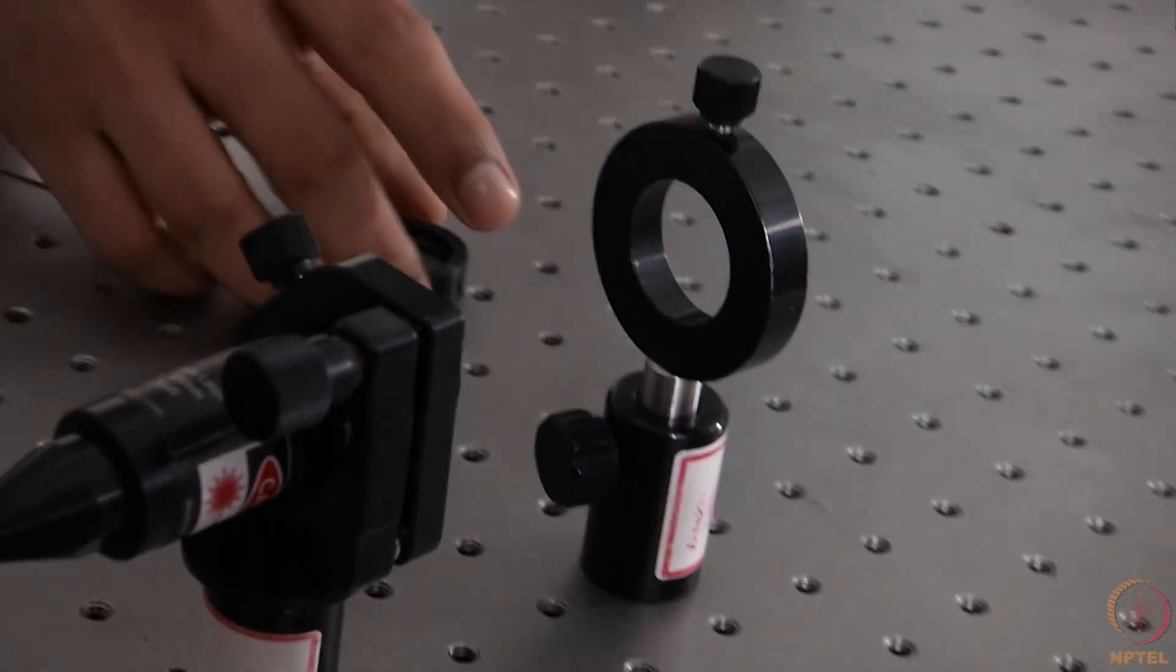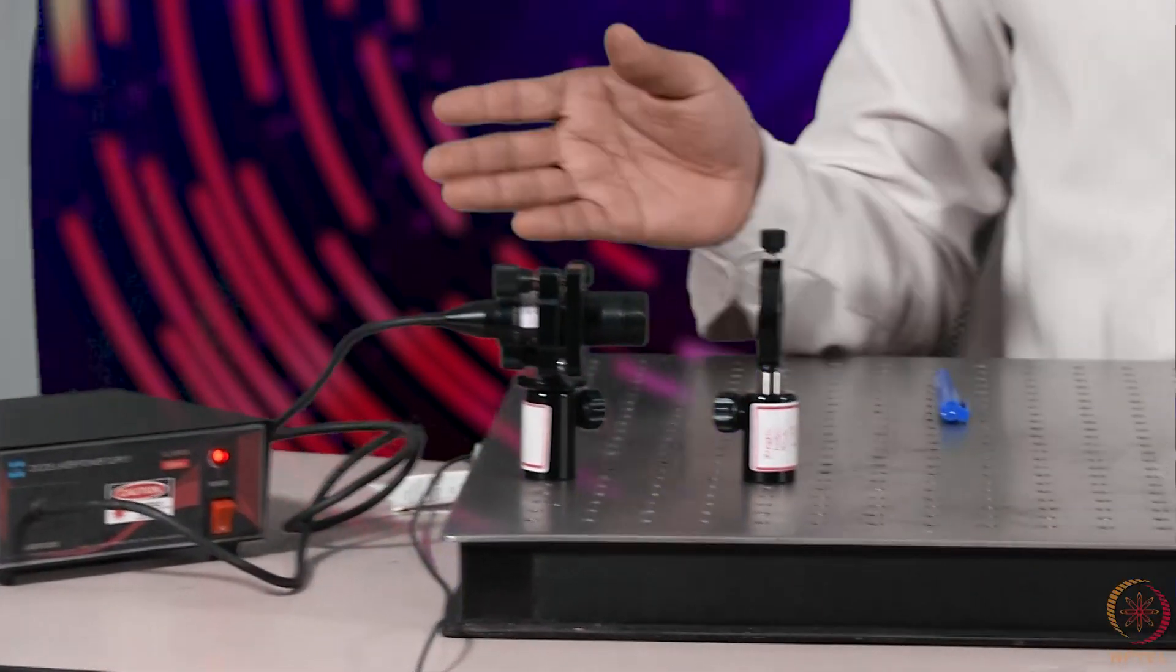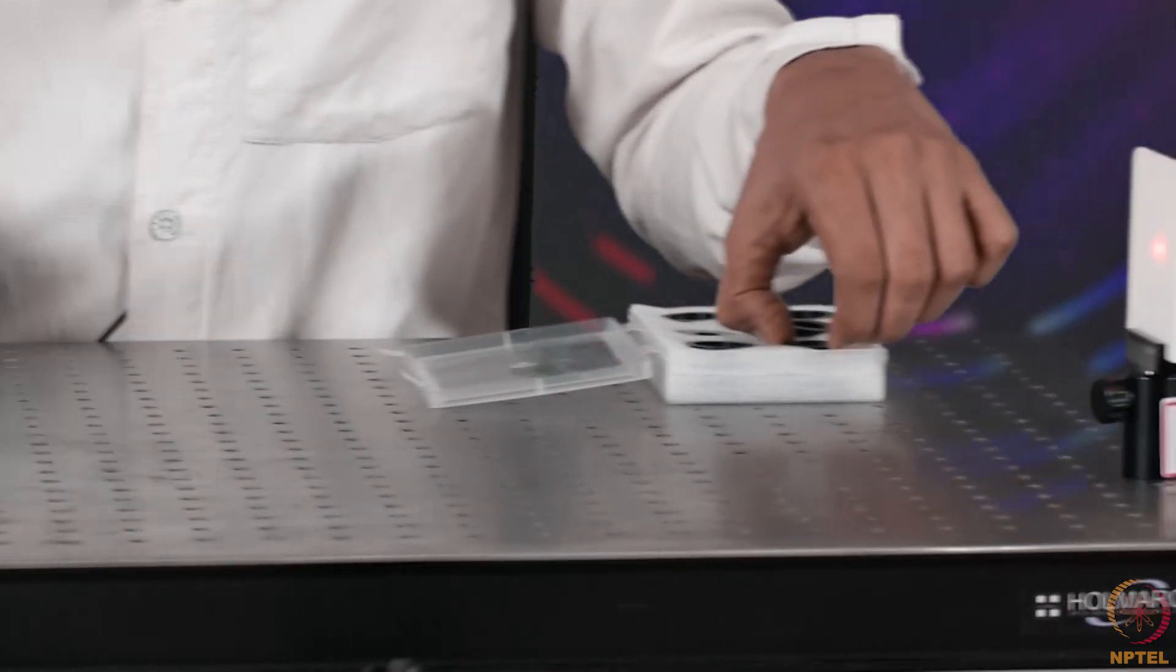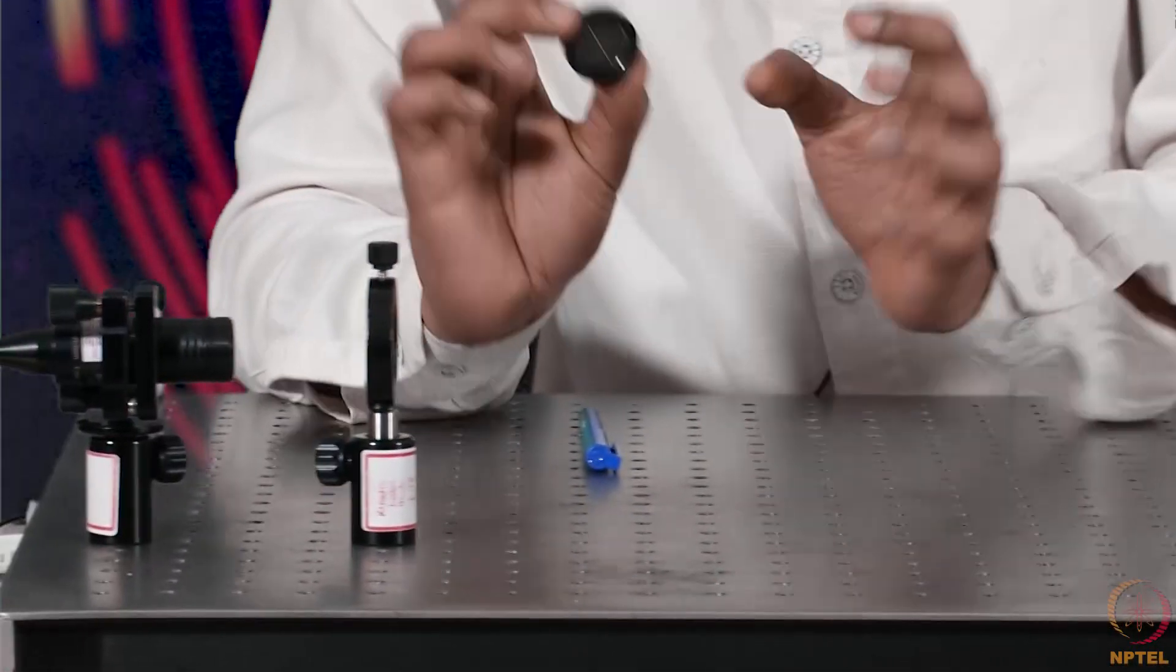This is approximately at the center now. This is the final setup. And now to the diffraction cell mount, I will put the diffraction cell which is a double slit here.